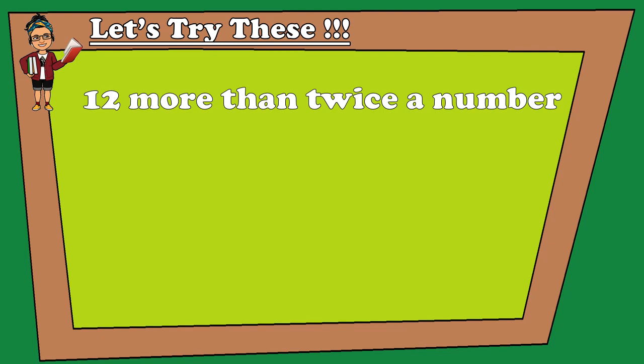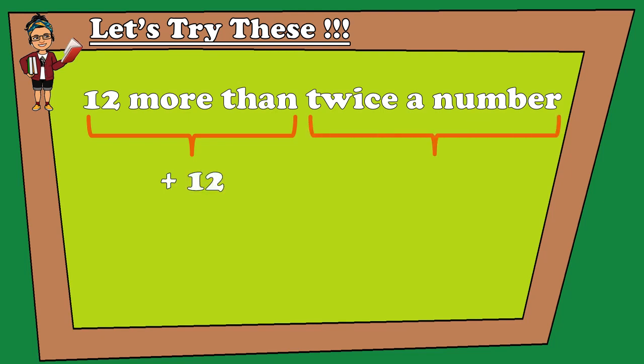Let's try another: '12 more than twice a number.' '12 more than' means plus 12, and 'twice a number' is simply 2N. So we write 2N plus 12 as our algebraic expression.